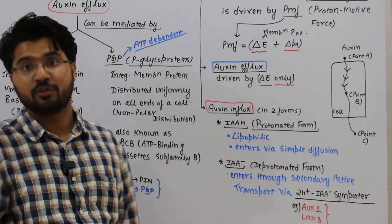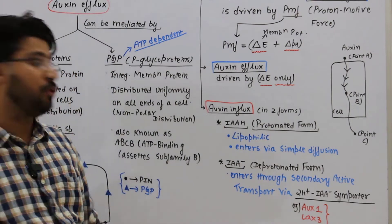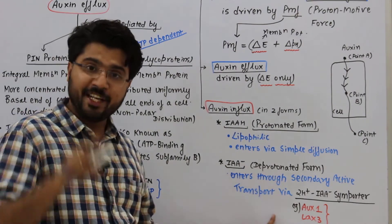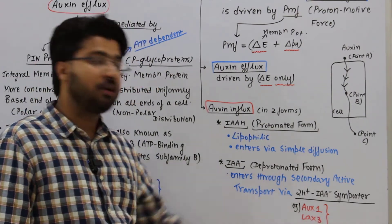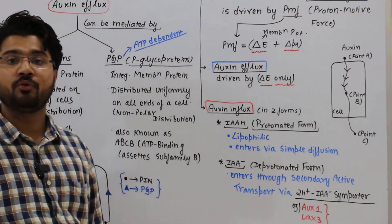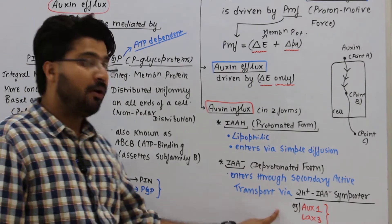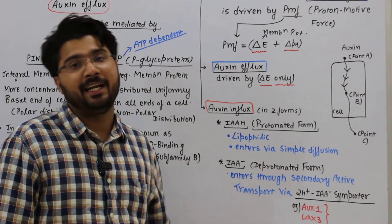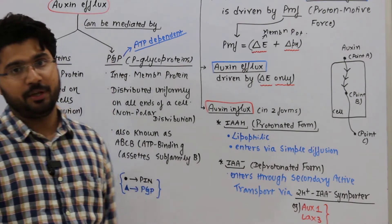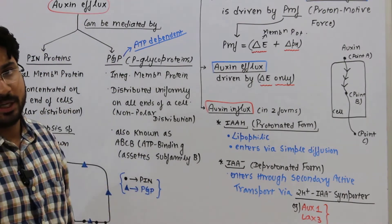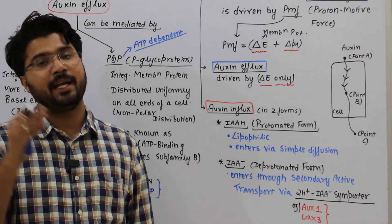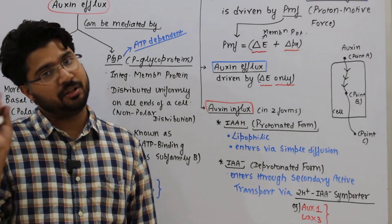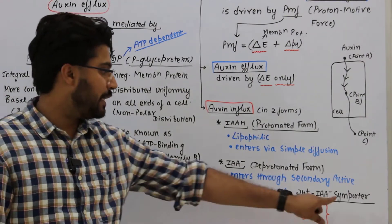Since both the protons and IAA⁻ move in the same direction, this is a type of co-transport called a symporter — specifically a 2H⁺/IAA⁻ symporter. The examples of proteins acting as 2H⁺/IAA⁻ symporters are AUX1 and LAX3 proteins, which you need to remember.